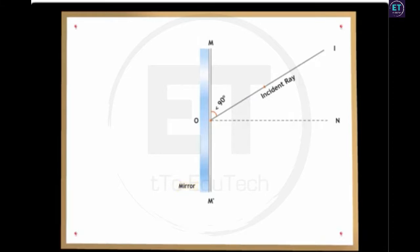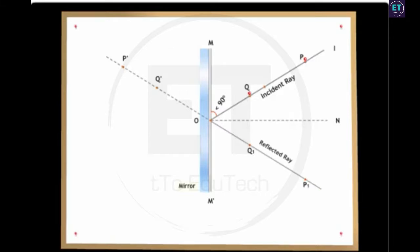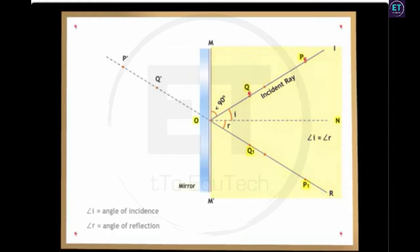Place a strip of plane mirror vertically on MM'. Then fix two pins P and Q on the incident ray IO. P' and Q', which are the images of P and Q respectively, are observed from the other side of the normal. Two pins P1 and Q1 are fixed such that these two pins and P' and Q' are collinear.